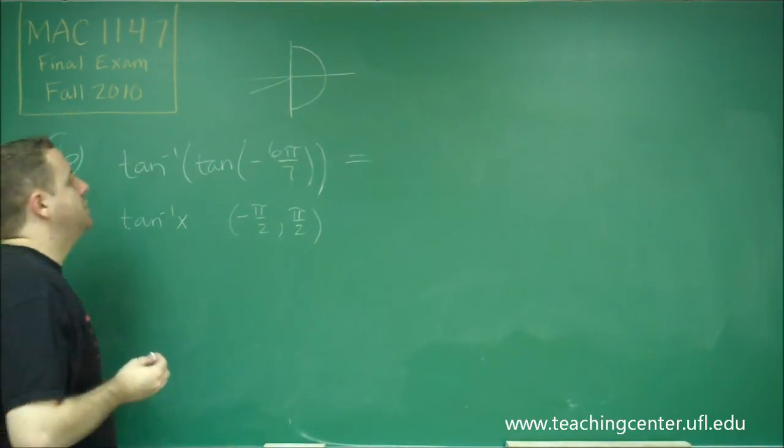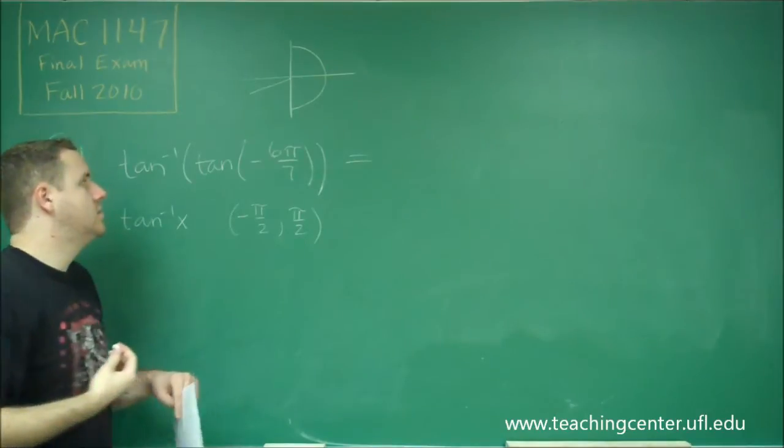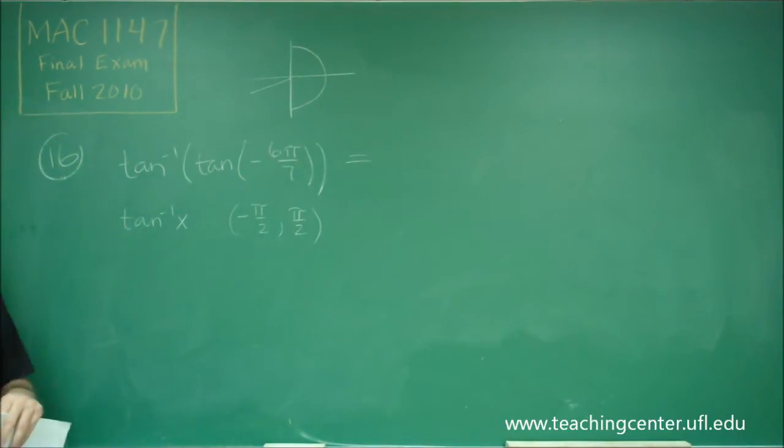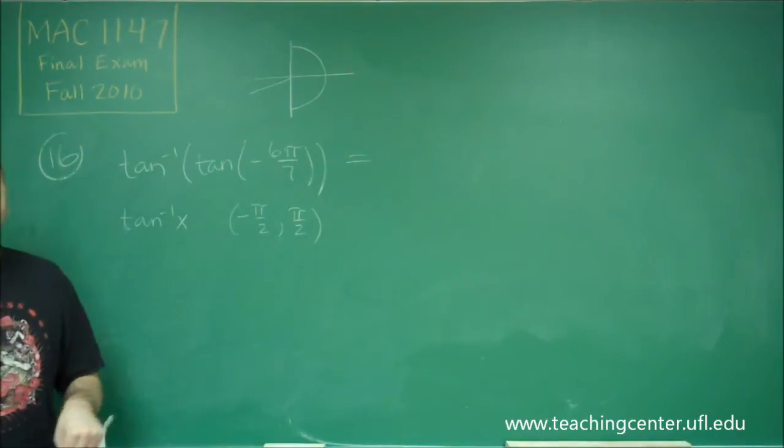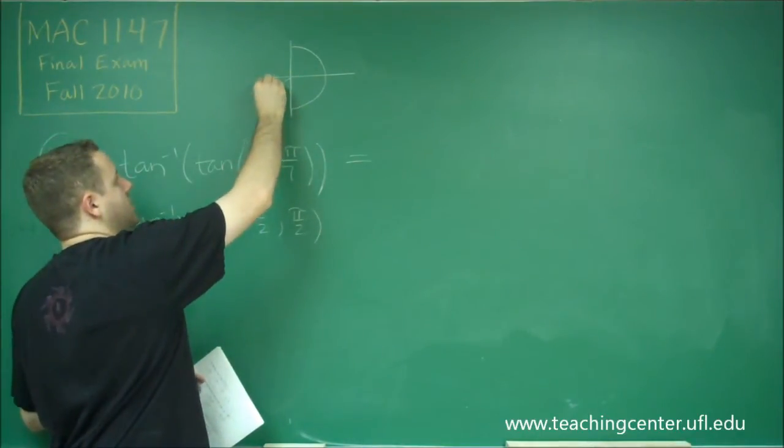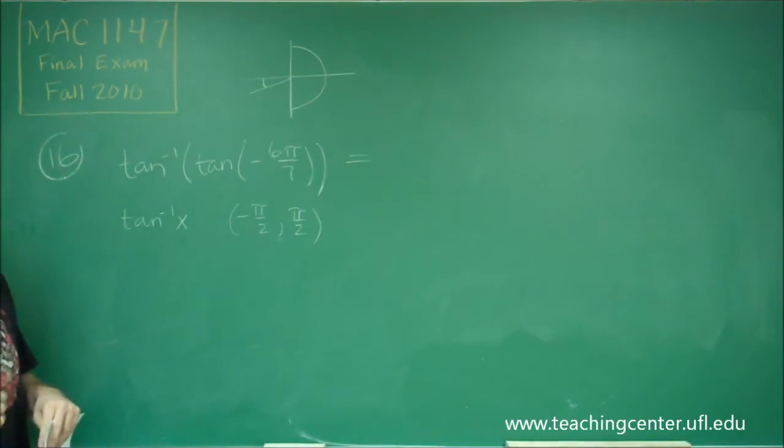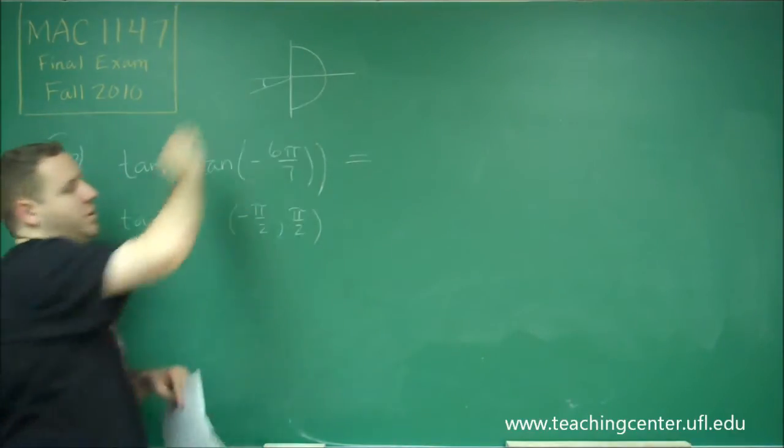So what we want to do is we want to find what angle has the same tangent value as that, but is in negative pi over 2 to pi over 2. In other words, what's the reference angle here? And then let's just make that in one of those two quadrants.